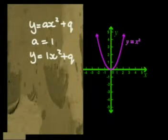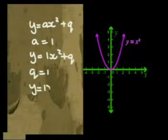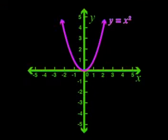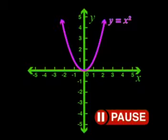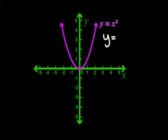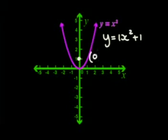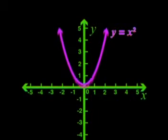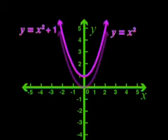Let's first look at what happens if q is equal to 1, so the new function is y equals x squared plus 1. Let's take a look at the parent graph of y equals x squared. What do you think the new graph will look like? I think the whole graph is going to shift up by one unit — instead of turning at (0, 0), it will turn at (0, 1). That's an excellent prediction. If the whole graph shifts up by one unit, it will look like this.